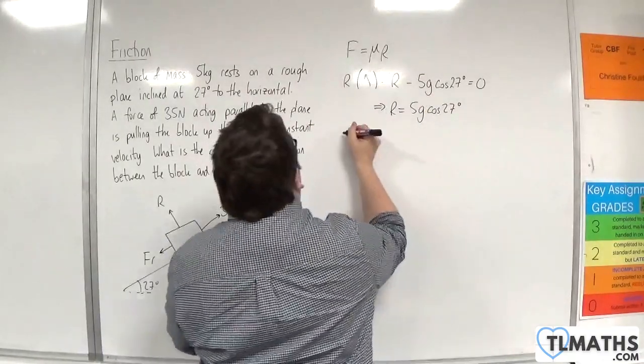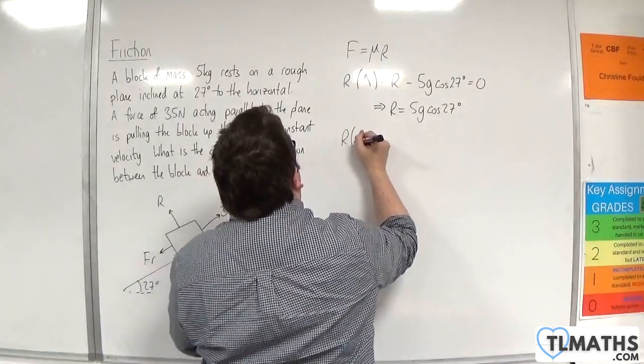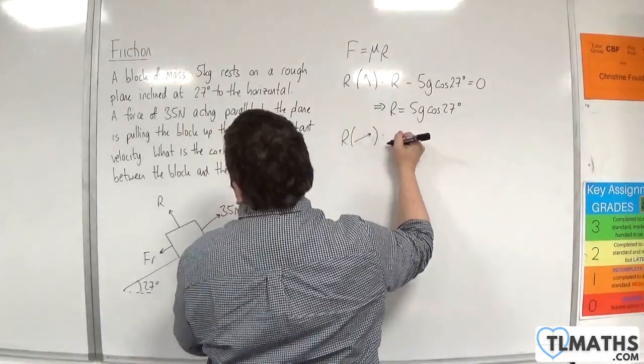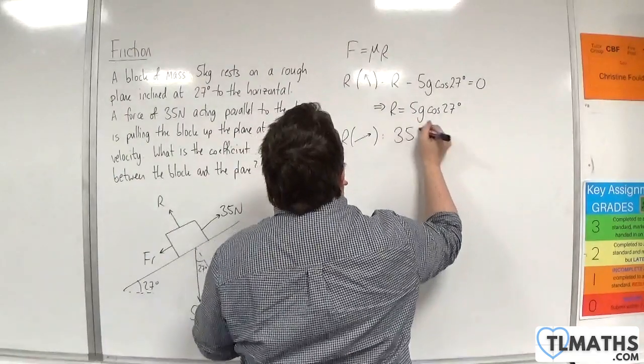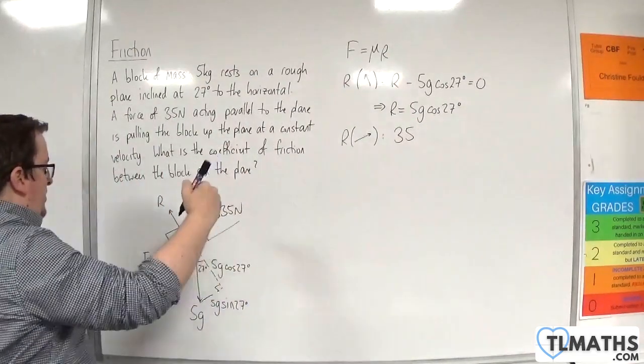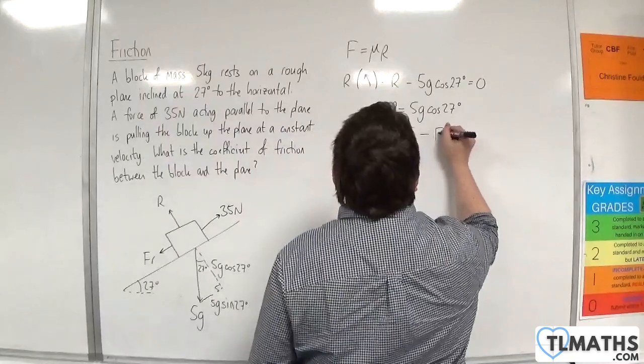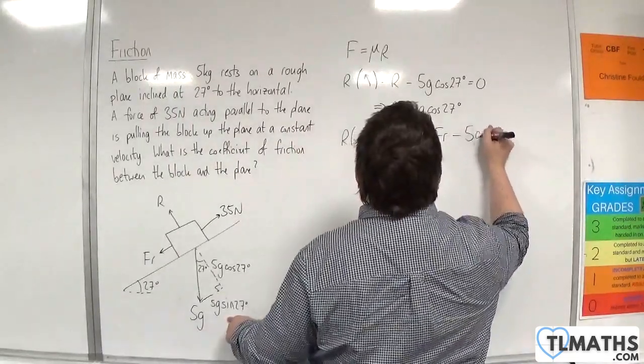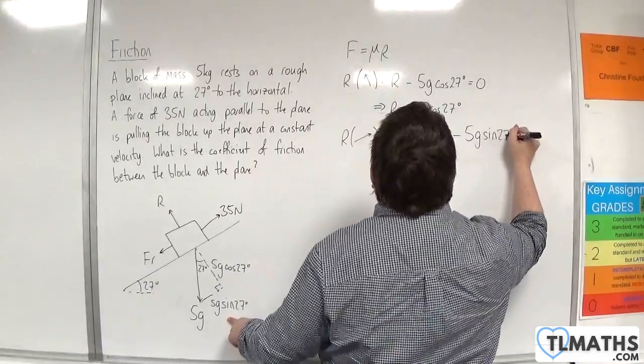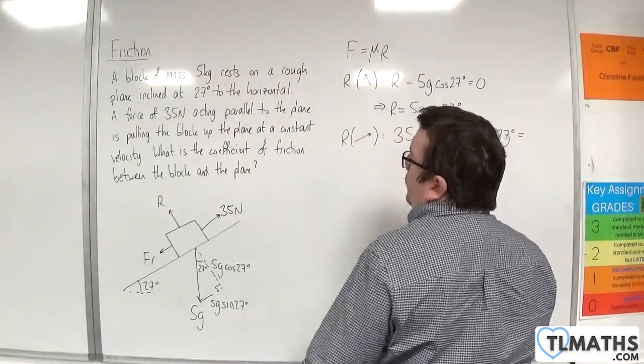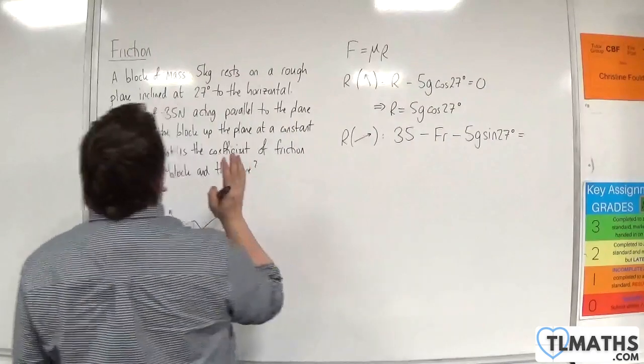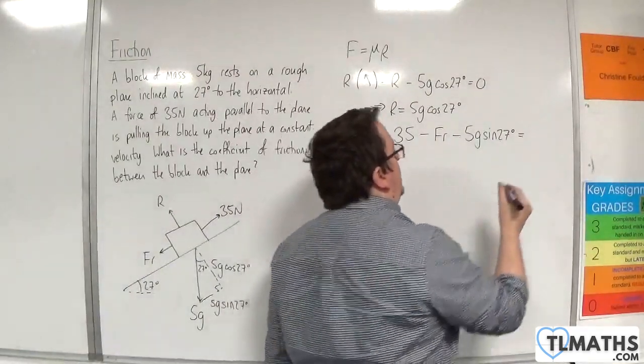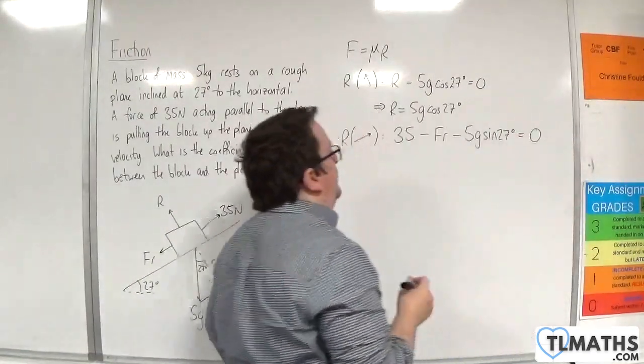Now, if I resolve parallel to the plane, taking up the plane as positive, we have 35 newtons take away the friction, take away the 5g sine of 27. And because it's going up the slope at a constant velocity, the acceleration is 0. So mass times acceleration will be 0.